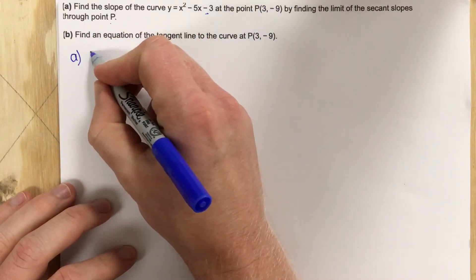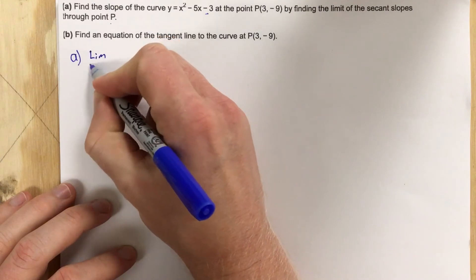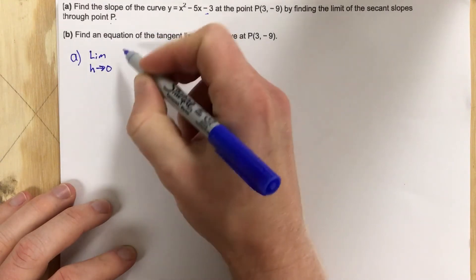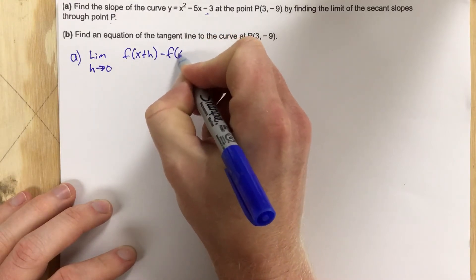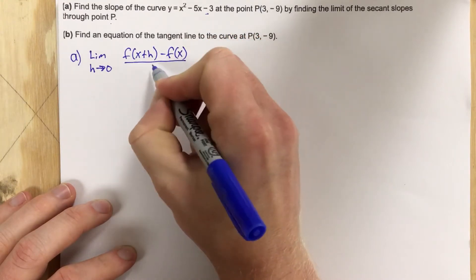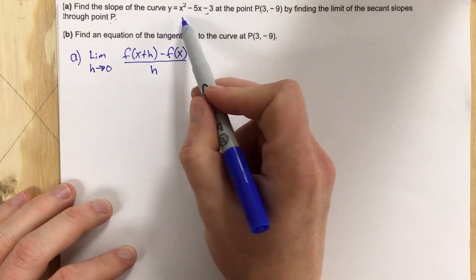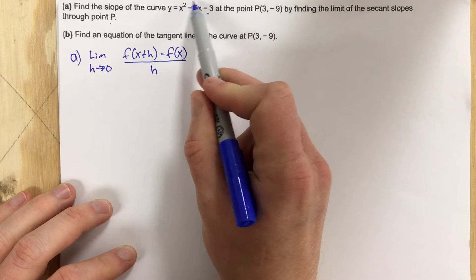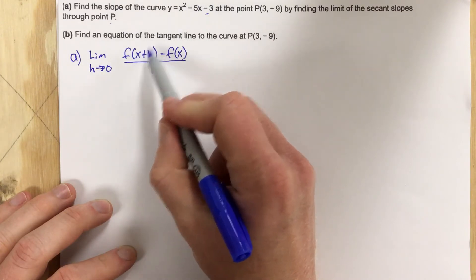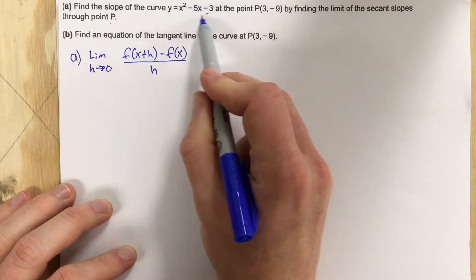Let's start with part A. If we want to find the slope at this point, we're going to start by doing the limit as h approaches 0 of f(x+h) minus f(x) all over h. We take this quadratic here and we're going to plug in x plus h into this function.